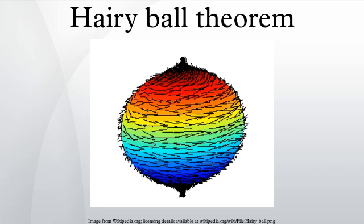This is a consequence of the Poincaré-Hopf theorem. In the case of the torus, the Euler characteristic is zero, and it is possible to comb a hairy donut flat.